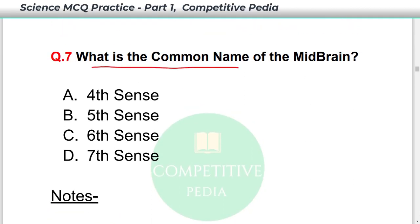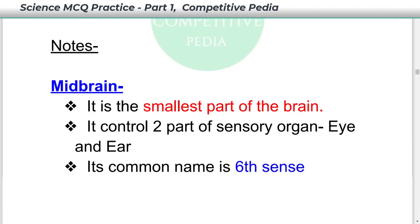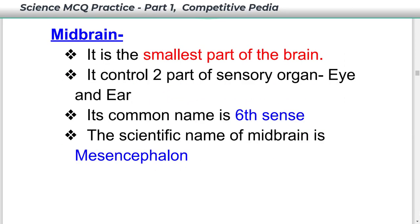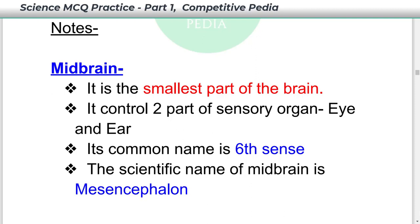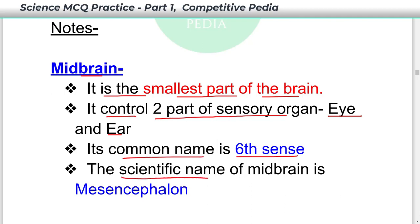What is the common name of the midbrain? The common name of the midbrain is sixth sense — option C. Midbrain is the smallest part of the brain. It controls two parts of sensory organs: the eye and the ear. Its common name is sixth sense, and the scientific name of the midbrain is mesencephalon.